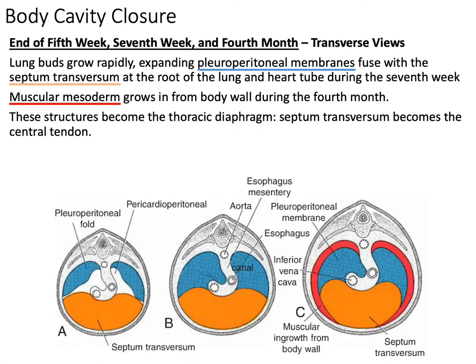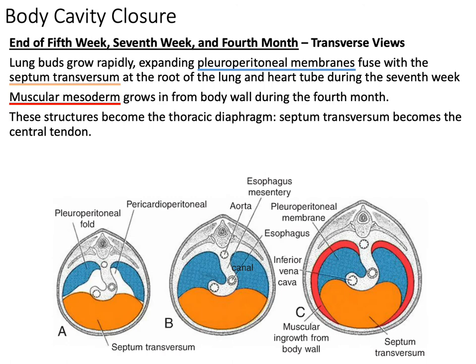We continue through body closure at the end of the fifth week, seventh week, and fourth month. Our lung buds are still growing rapidly, expanding the pleuroperitoneal membranes. Those pleuroperitoneal membranes are actually going to fuse with the septum transversum during the seventh week, fusing at the root of the lung on the heart tube. We also see, shown in red in picture C, our muscular mesoderm growing in to form the body wall muscles, which have an important role in respiration and in keeping everything together.